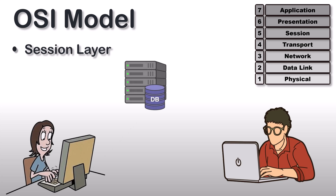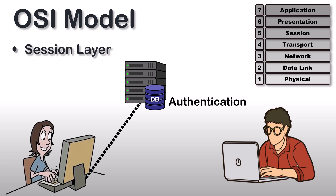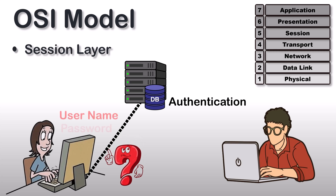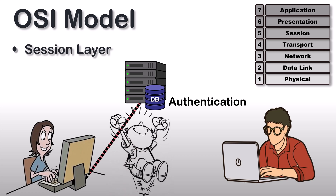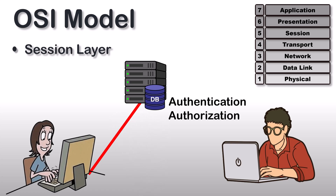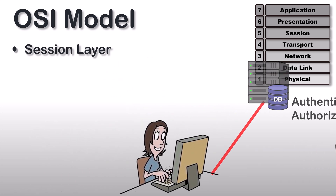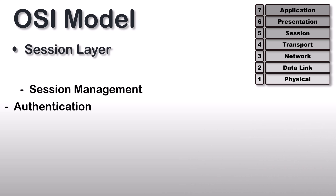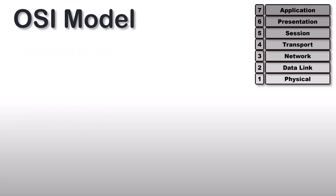Just before a session is established between a PC and server, the server performs a function called authentication. Authentication is a process to verify who you are, and for this verification the server uses a username and password. Once the entered username and password are matched, a session is established. After authentication, user authorization is checked — authorization is used by the server to check if you have permission to access a file or not.